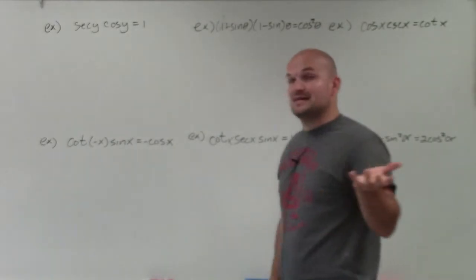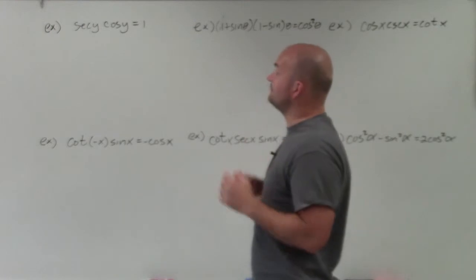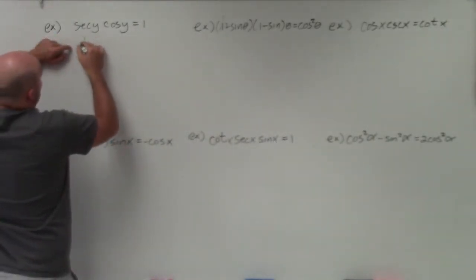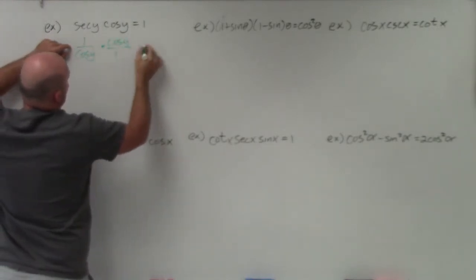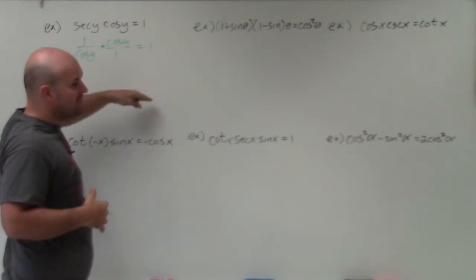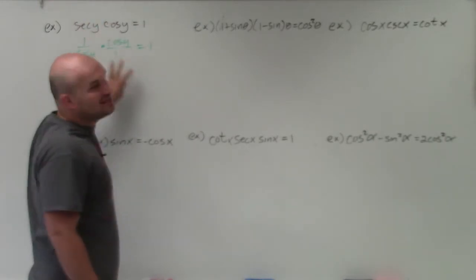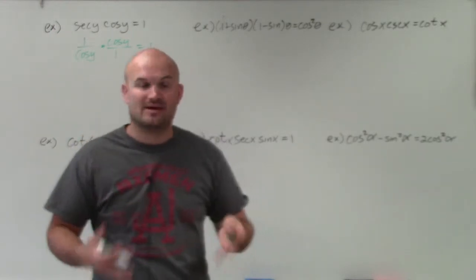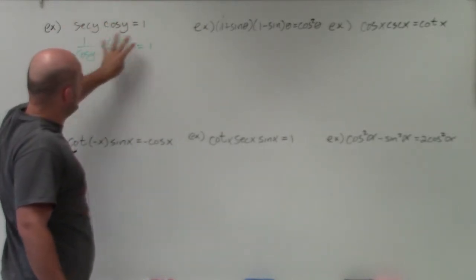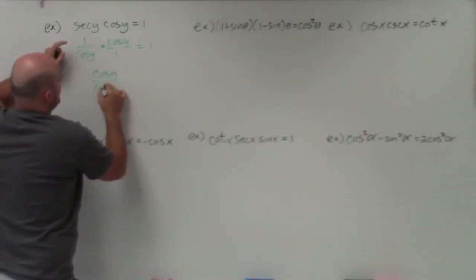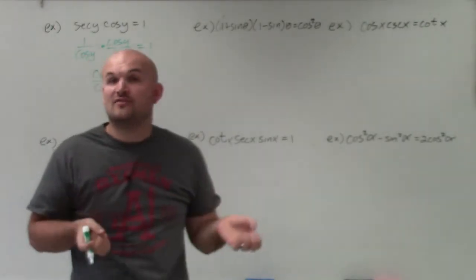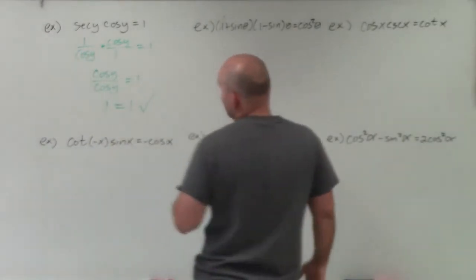Not always are we going to be able to use identities — a lot of times we can just rewrite them in terms of sines and cosines. In this example, I don't have an identity for secant of y times cosine of y; however, I can rewrite this in terms of sines and cosines. So I'll rewrite secant as 1 over cosine of y, times cosine of y, over 1, equals 1. Always rewrite the whole identity — a lot of students forget that it's equal to the other side and make mistakes. When I multiply across, I'm left with cosine of y over cosine of y, which equals 1. So I can verify that the left side equals the right side.